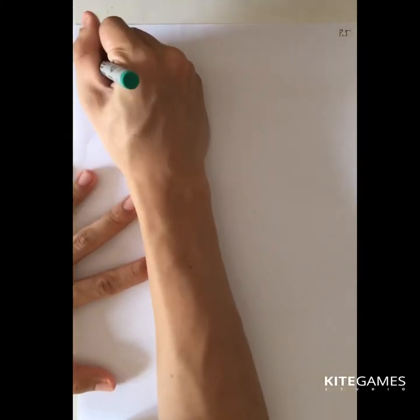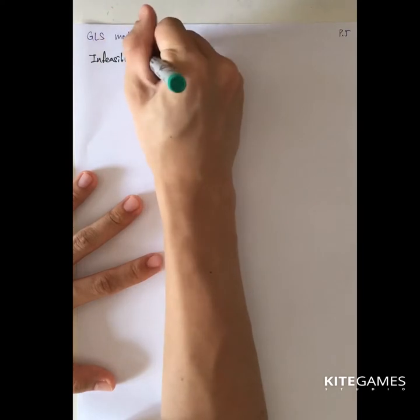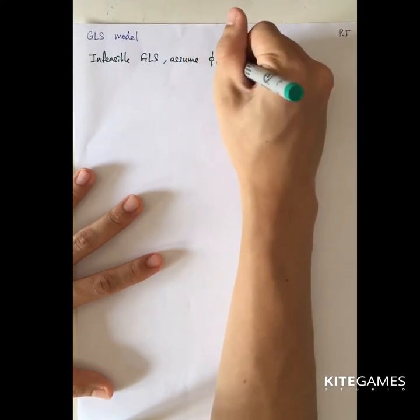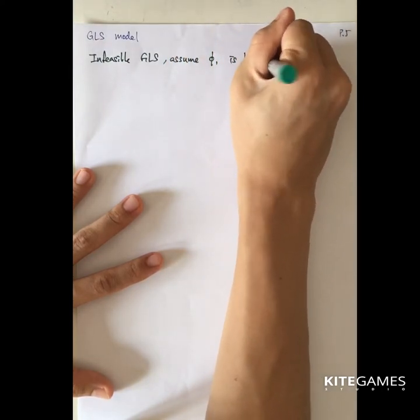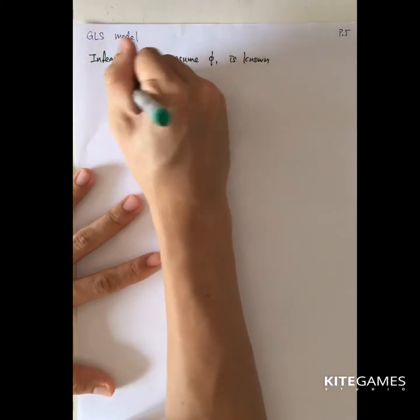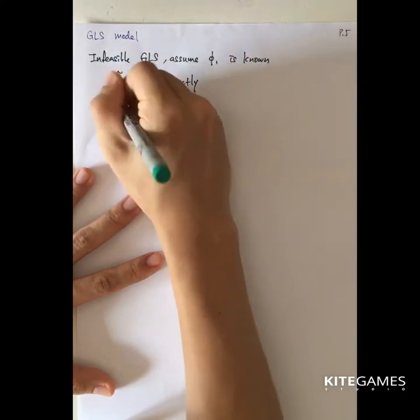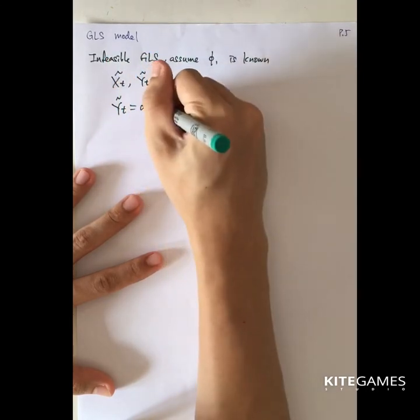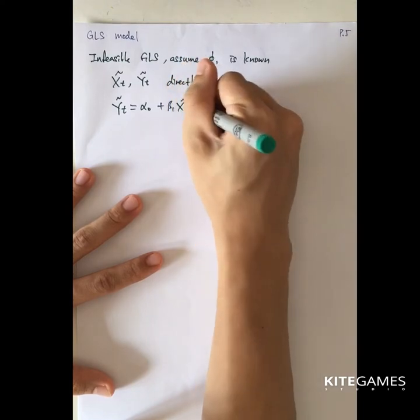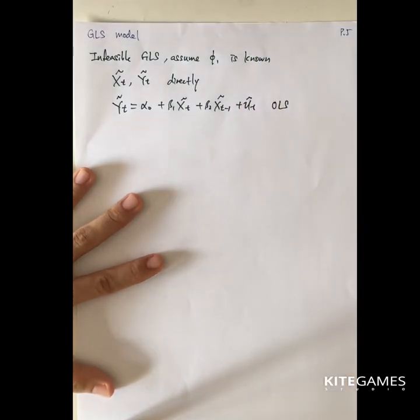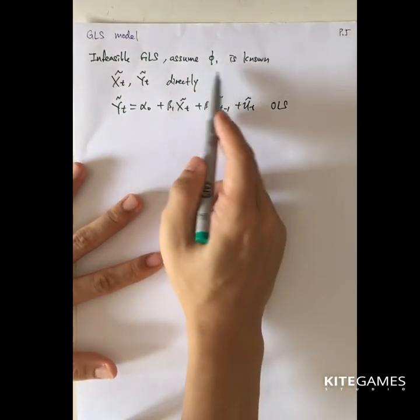The other method is the GLS model — the generalized least squares model. There are two GLS models. One is called the infeasible GLS, which assumes phi_1 is known. Since phi_1 is in fact unknown, this is not feasible in practice. But if phi_1 were known, you could directly calculate x-tilde_t and y-tilde_t, and then compute alpha_0, beta_1, and beta_2 using OLS easily.